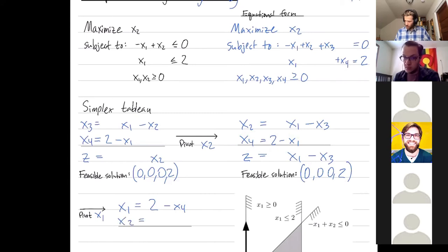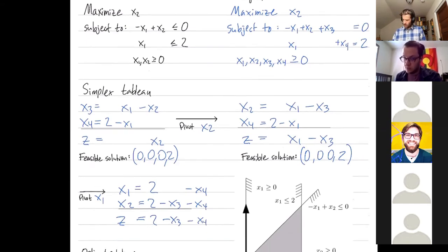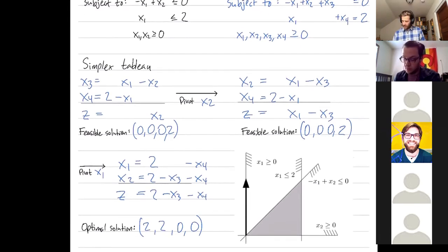And then x2 is equal to... I want to write it in terms of x3s and x4s. So I plug in 2 minus x4 for x1. So this is 2 minus x3 minus x4. All right. And my optimization function, I plug 2 minus x4 in for x1. And I get 2 minus x3 minus x4. All right. So what solution am I at now? My non-basic variables x3 and x4 are 0. And that allows me to solve for my basic variables x1 and x2. They're both 2. And this is actually the optimal solution. I can't increase x3 or x4 without doing worse.